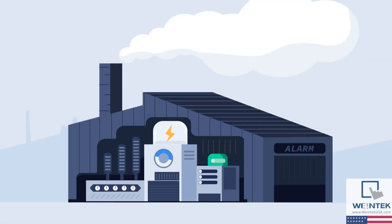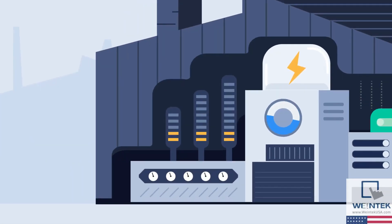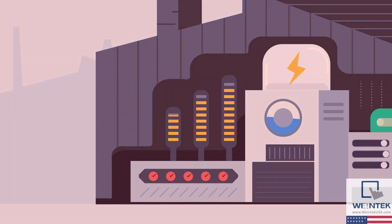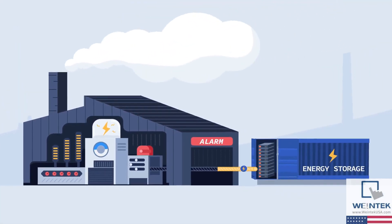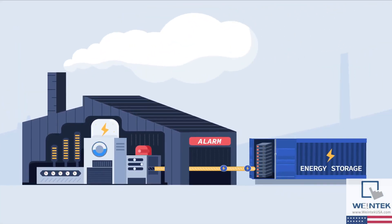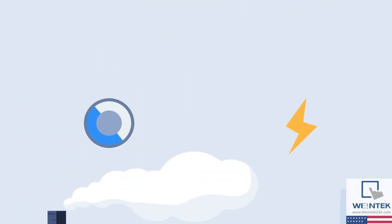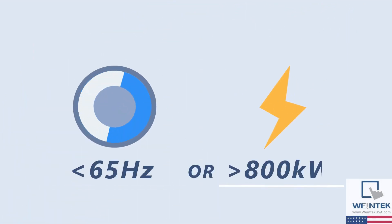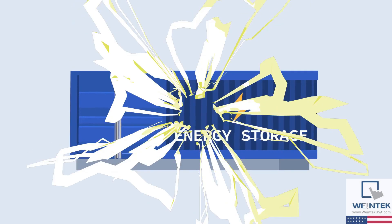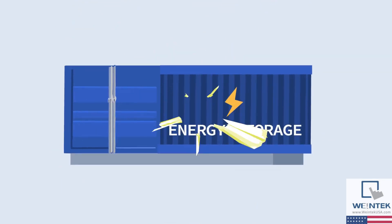In a factory's electrical power system, during peak power demands, the battery energy storage system should release energy. For example, when the frequency drops below 65 hertz, or when the power demand exceeds 800 kilowatts, the energy storage should start releasing energy.